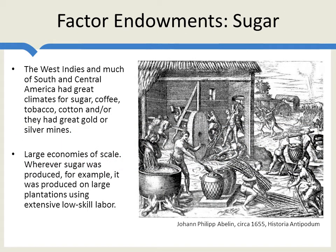Let's begin with sugar. The West Indies and much of South and Central America had great climates for sugar, also for coffee, tobacco, cotton, and a lot of these places also had very productive gold and silver mines. What unites all of these activities is they involve large economies of scale. Sugar has never been produced on small family farms or sole proprietorships. When sugar is produced, it's produced on large plantations using a lot of low-skill, often slave labor — back-breaking, hard labor. Hierarchical production: one guy at the top, a lot of low-skill, hard slave labor at the bottom.